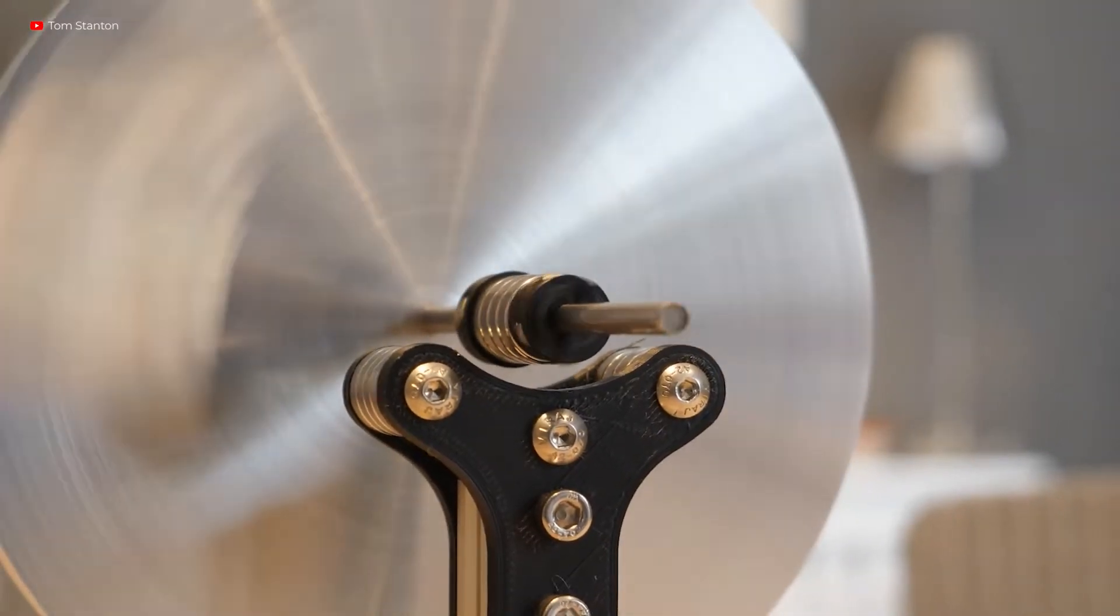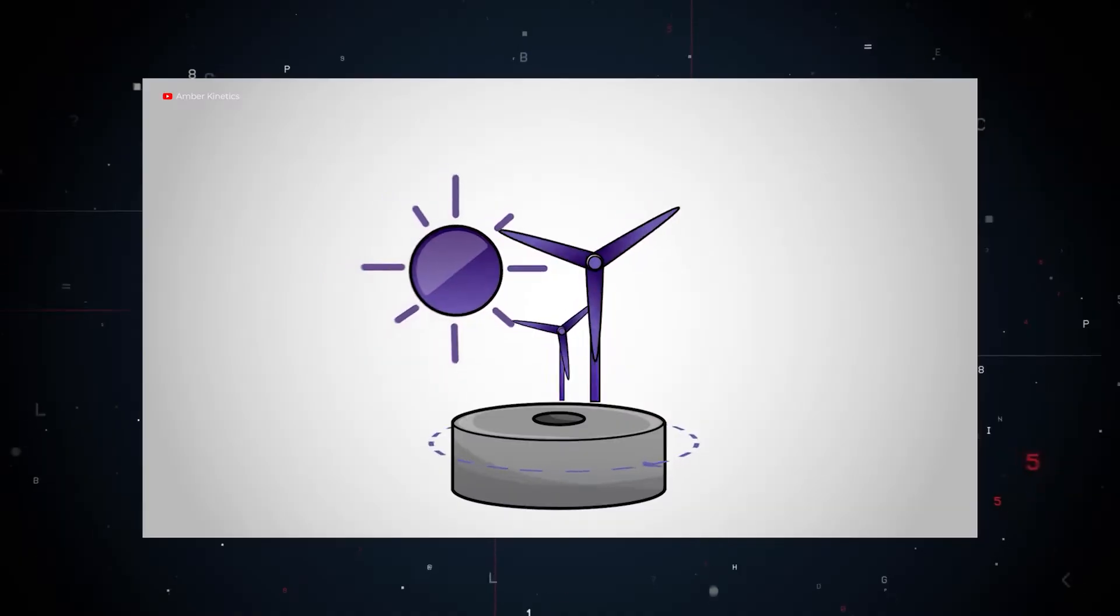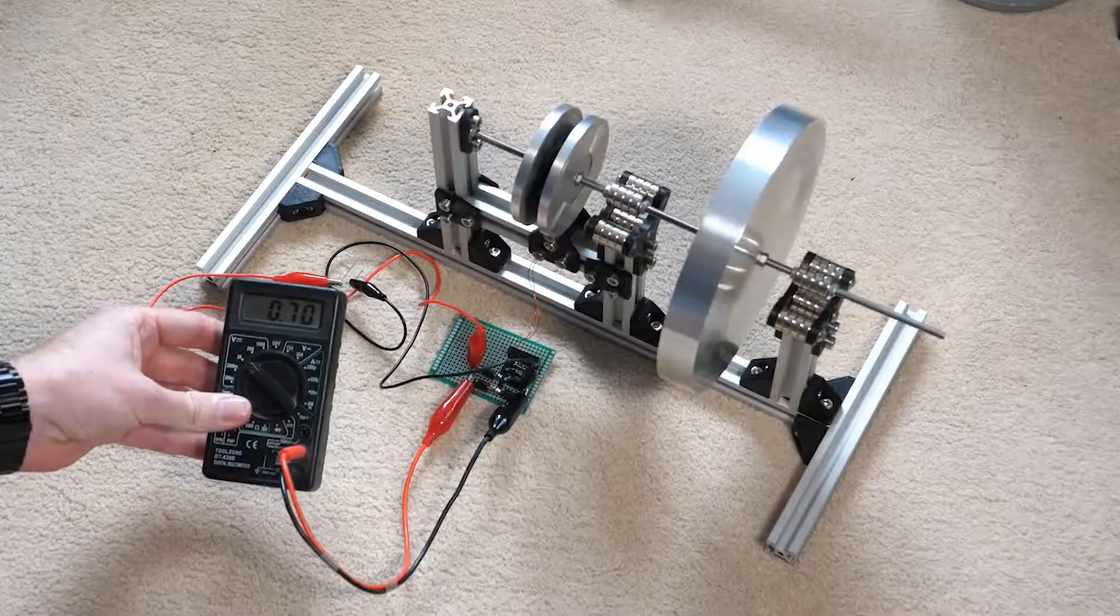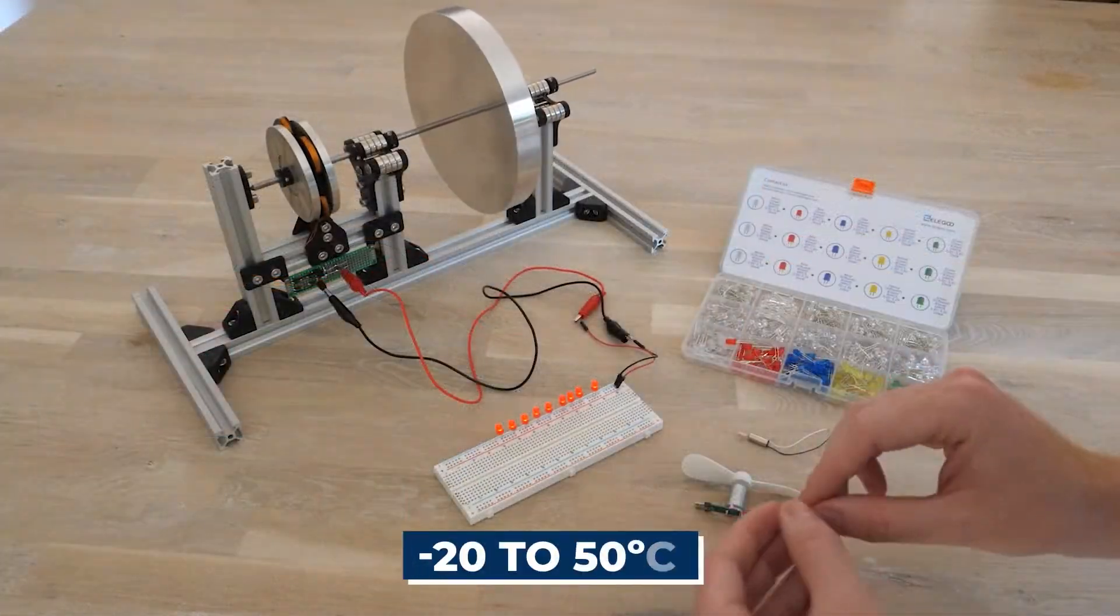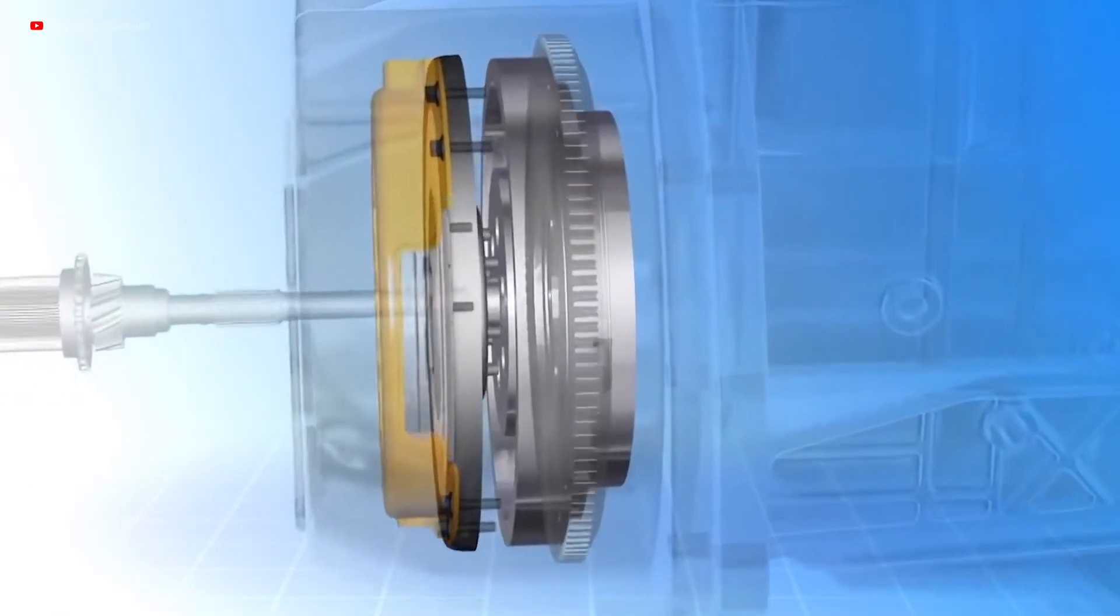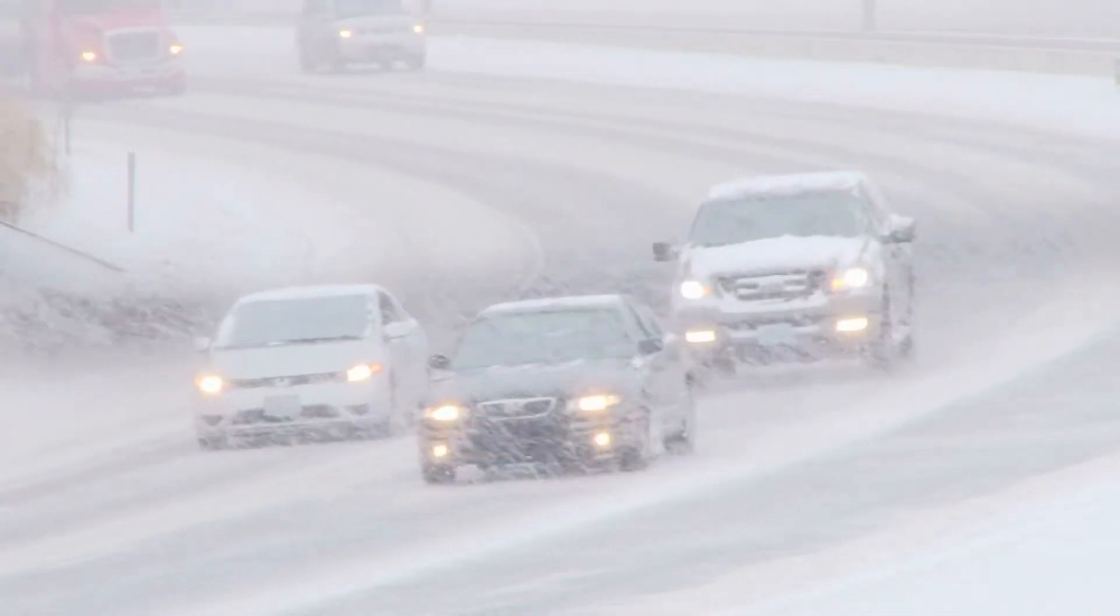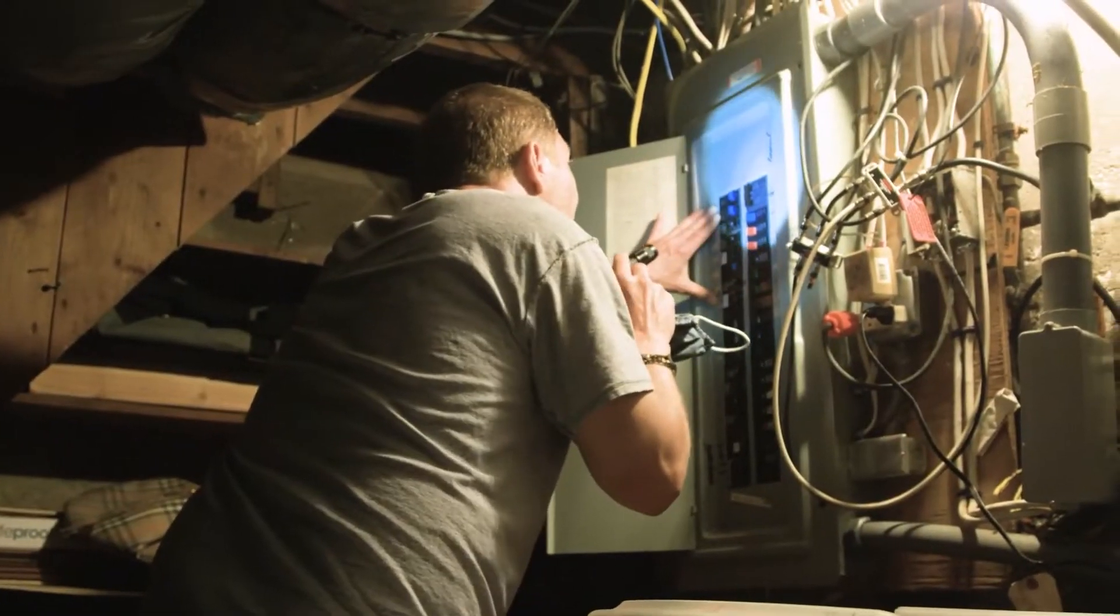Flywheel energy storage methods have a round-trip efficiency of greater than 85%. In other words, the proportion of electricity stored is eventually recovered. Furthermore, unlike chemical batteries, they aren't influenced by temperature changes and can work from minus 20 to 50 degrees Celsius. The diversified needs of today's energy market necessitate technology like this that can handle unpredictable weather patterns and environmental disasters, as well as rolling power outages and obsolete power transmission networks.